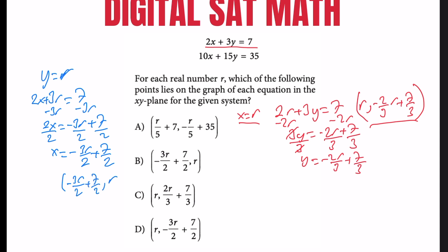So the choice you're looking for is (-3r/2 + 7/2, r) for the x and y values. If you pay attention to the choices, we have this choice in B, so our right answer for this question is B.